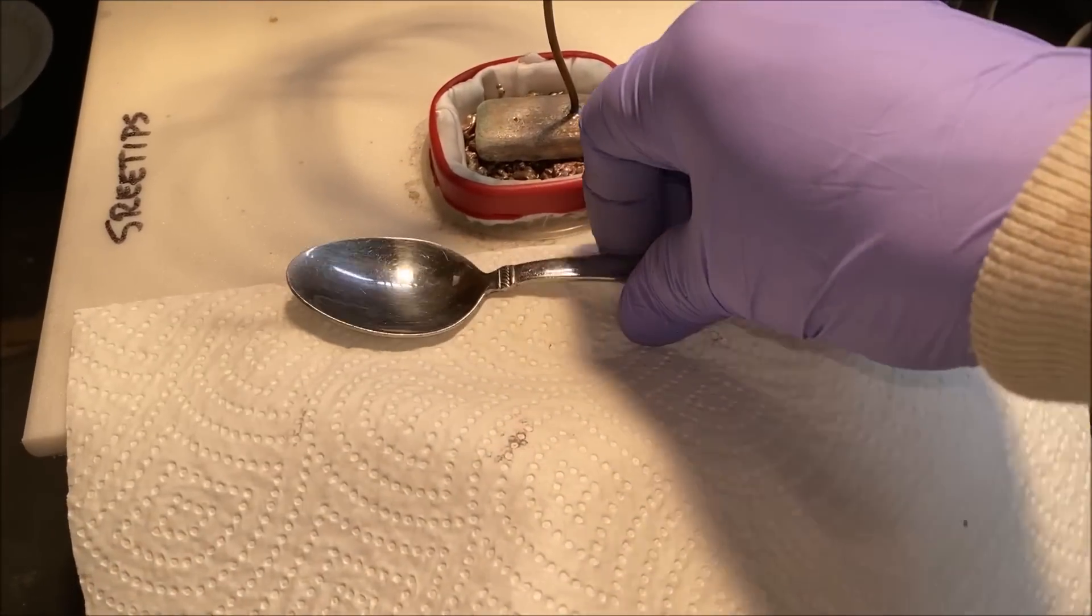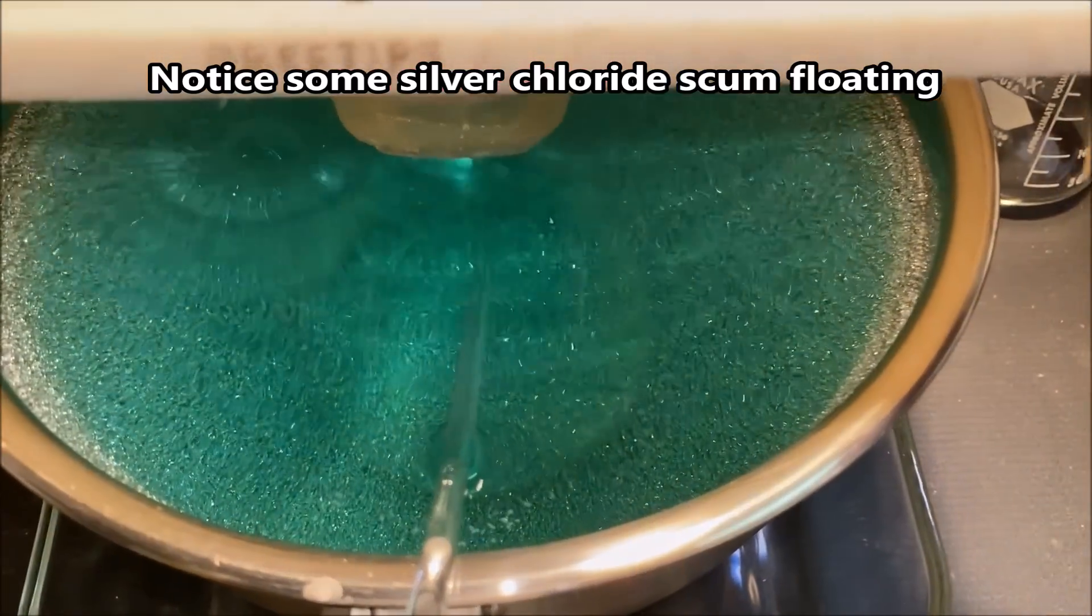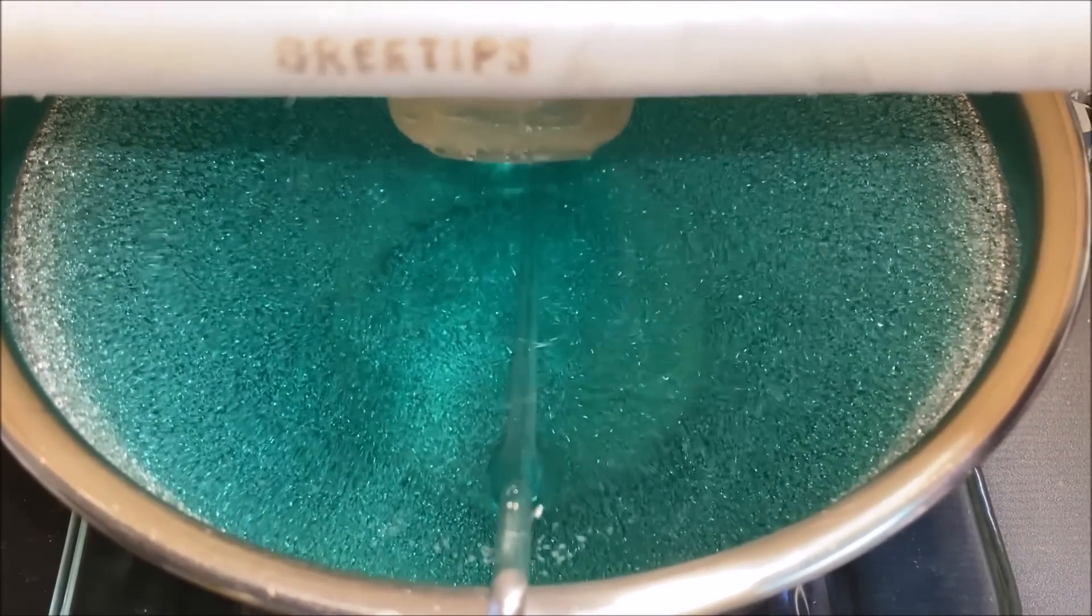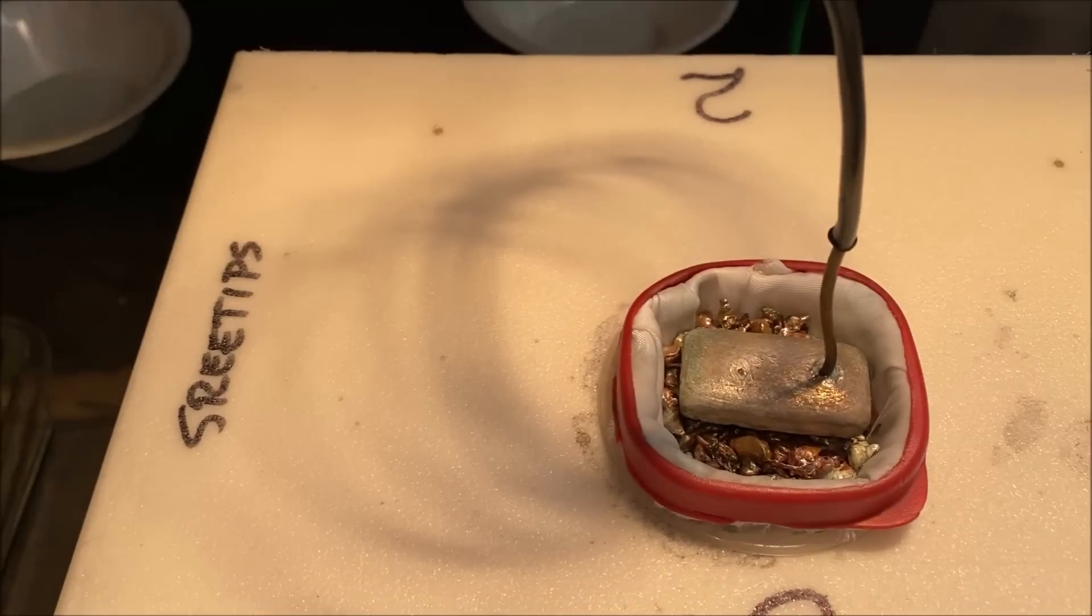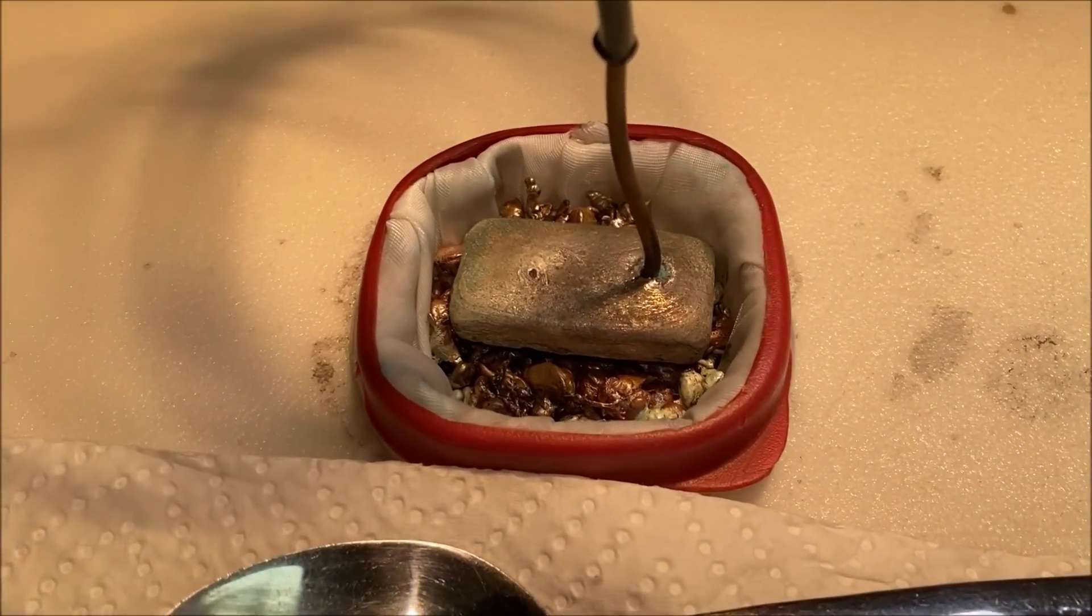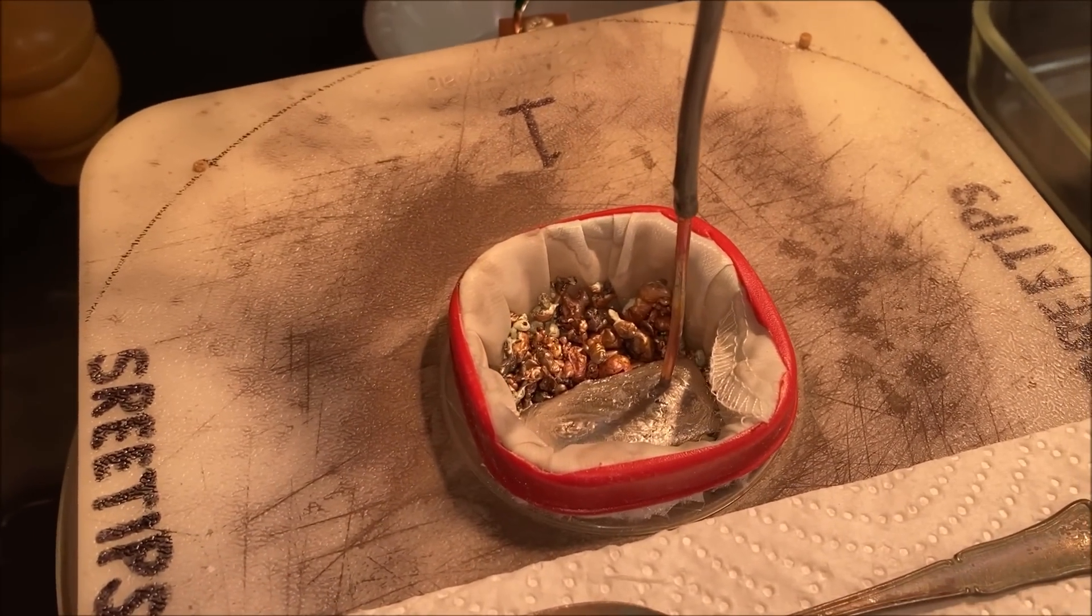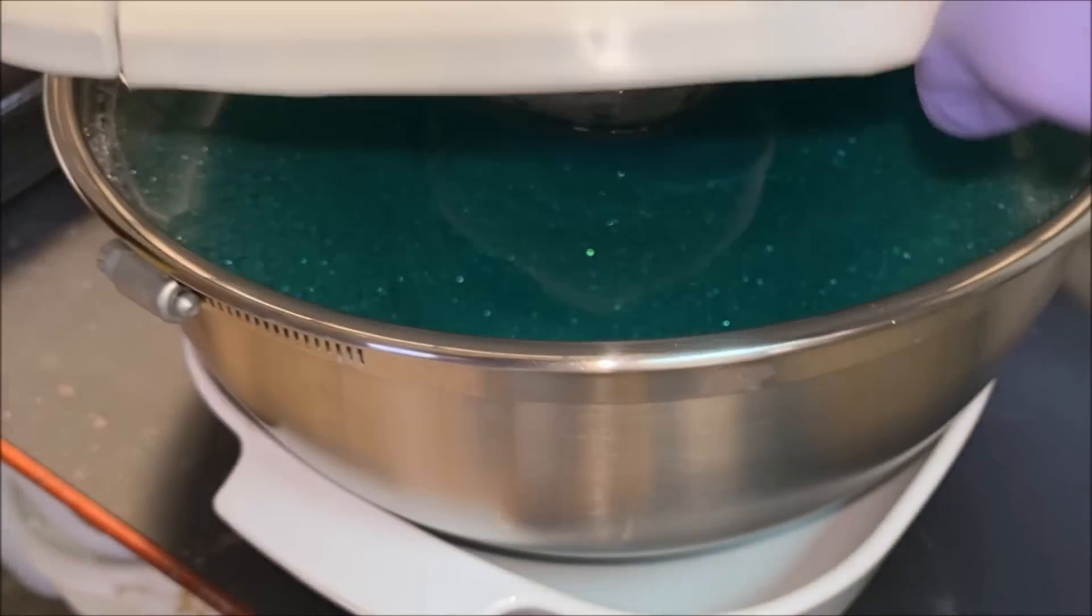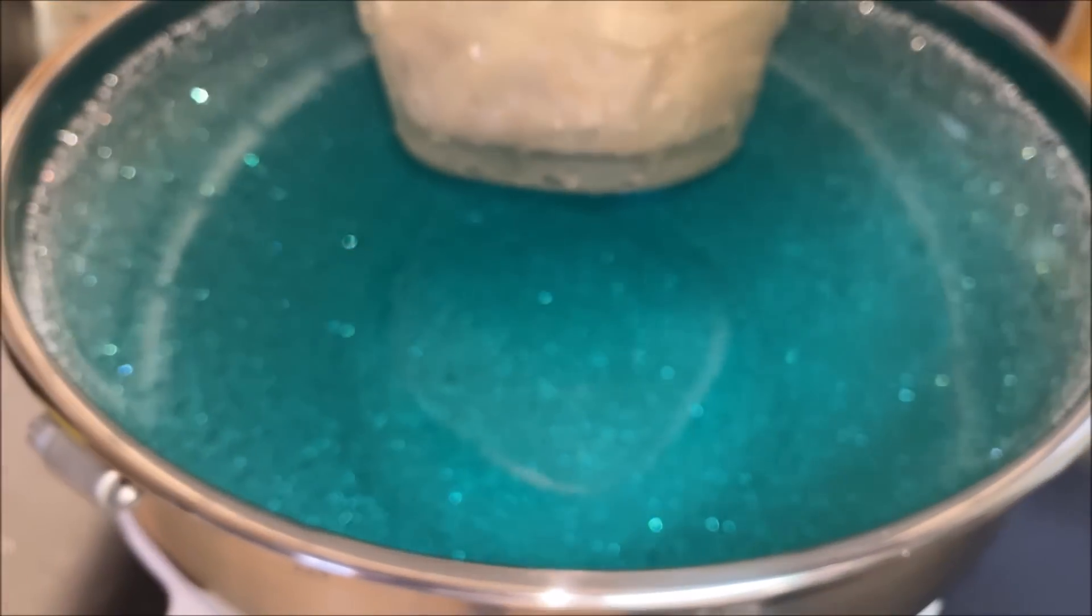Oh yeah, look at that beautiful pure silver crystal. Let's have a look down inside cell number two. That don't look too bad either, but it's quite obvious that cell number two has not consumed as much impure silver as cell number one has.